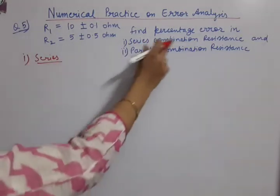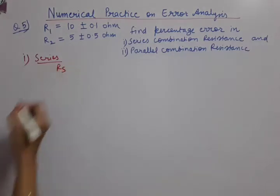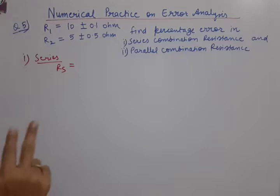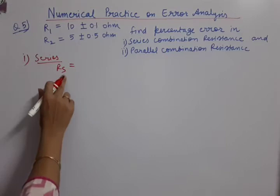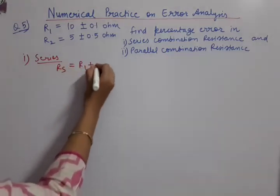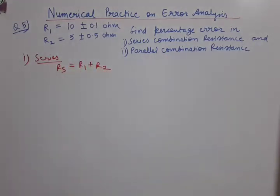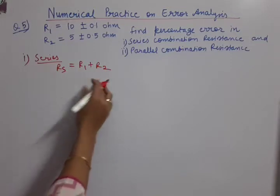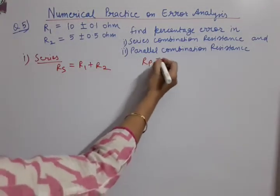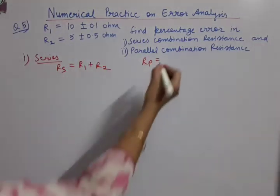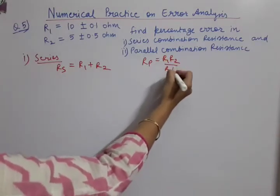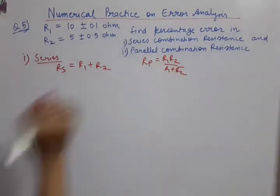It is about resistances. R1 resistance value given, R2 resistance value is given. Find the percentage error in series combination resistance and parallel combination resistance. Now, let us solve series. First of all, series combination resistance, we will call it RS. And you already know, in series, if R1 and R2 are connected, then the series answer is direct addition of the two. This is from the circuit chapter of 10th class.